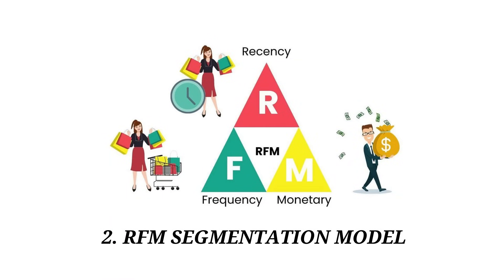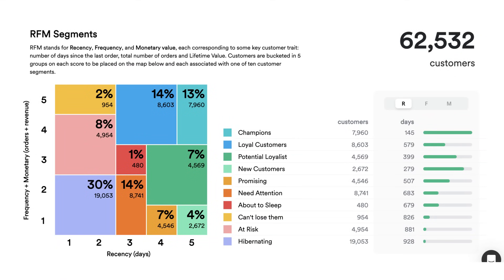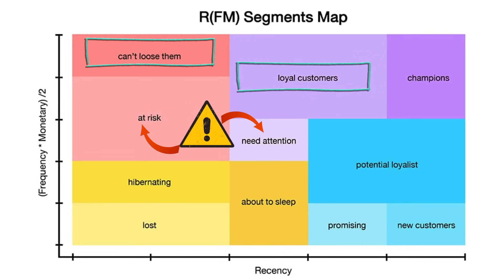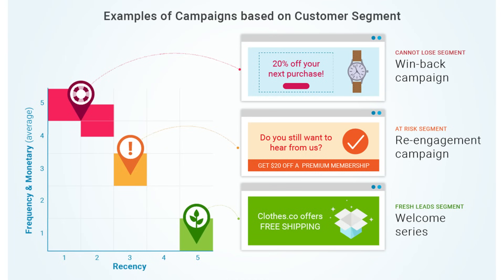Number two is RFM segmentation. RFM stands for Recency, Frequency, and Monetary segmentation. Basically, it is based on customers' transaction history with the company. By segmenting customers according to RFM, marketers can target high-value loyal customers differently from occasional buyers, enhancing personalization and engagement.